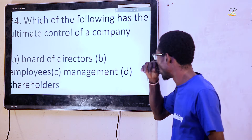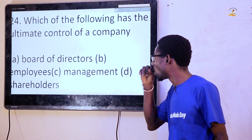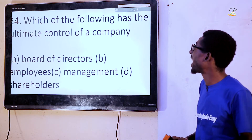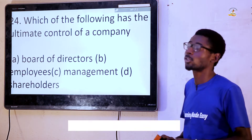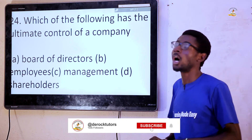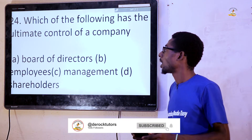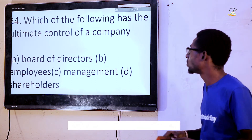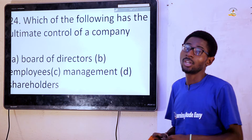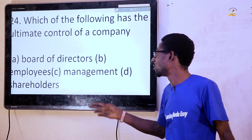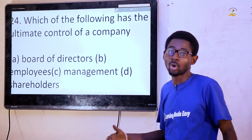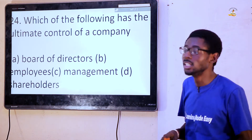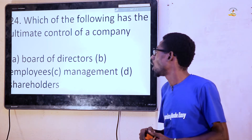Question 24: Which of the following has the ultimate control of your company? Options are: board of directors, employees, management, shareholder. The answer is management. Management are also called the owners or the employer.